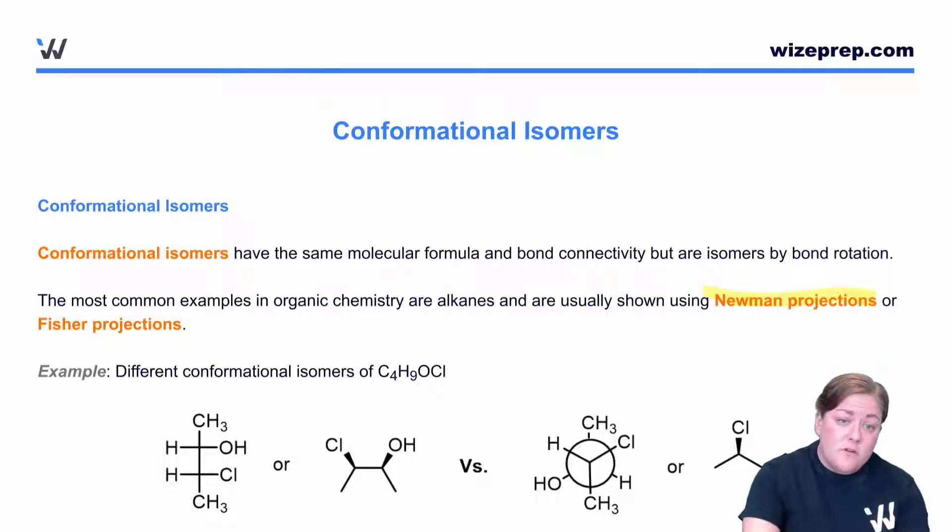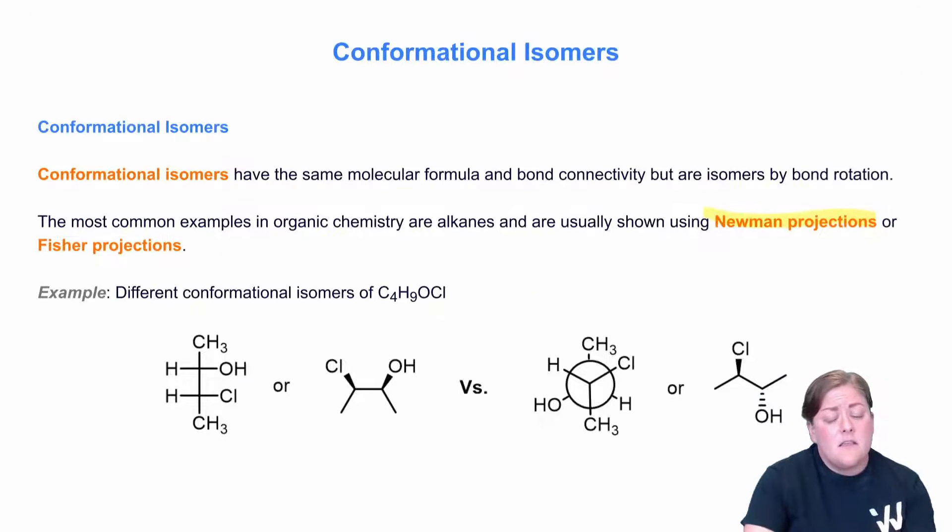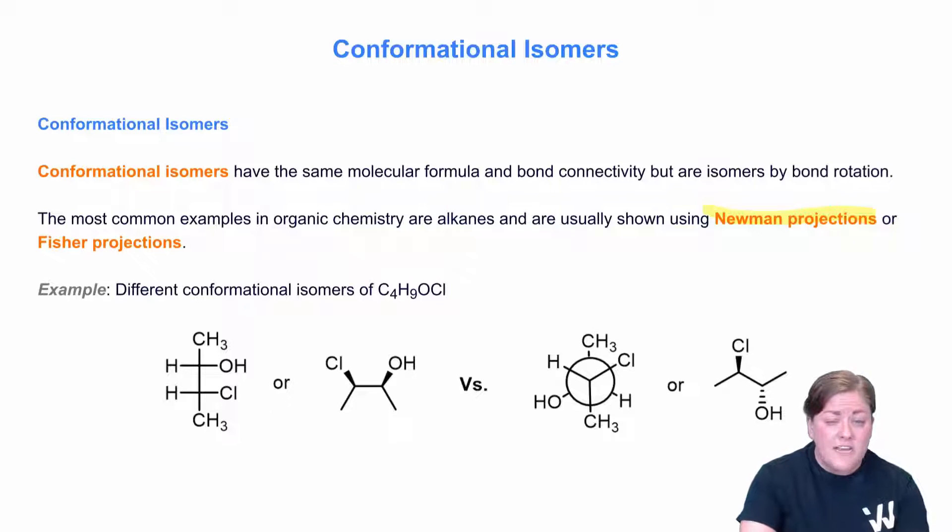Now here I've shown a few different types of conformational isomers. They're a little bit tricky because they're not both drawn in the same way, but the idea here is that what we're showing is rotation about the carbon-carbon single bond leading to two different structures.